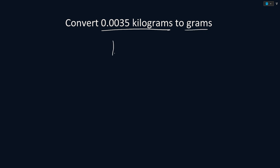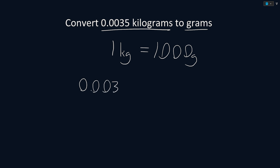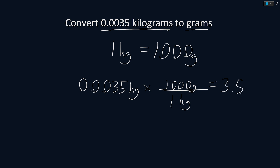Convert 0.0035 kilograms to grams. We know that 1 kilogram is equal to 1,000 grams. So to convert our units, we start with what we were given, which was 0.0035 kilograms, and multiply by a fraction that cancels out our units. We will put grams on top and kilograms on the bottom. Solving this, we get that 0.0035 kilograms is equal to 3.5 grams.